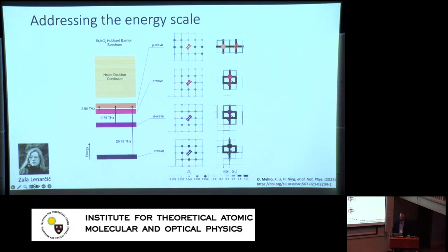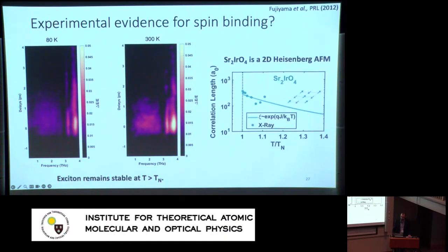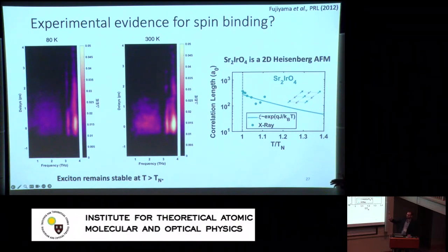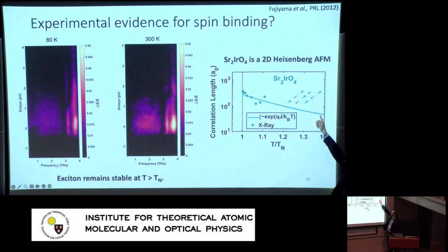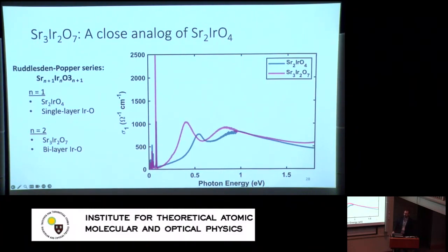We also performed experiments on a related compound, Sr₃Ir₂O₇ (the bilayer 327 analog of Sr₂IrO₄ in the Ruddlesden-Popper iridate series). In 327, because of the bilayer nature, there are more exchange constants to track, and importantly the interlayer exchange JC plays a key role. Different groups have found the magnetism in 327 is likely in the 3D Ising universality class rather than the 2D Heisenberg class, which means that above T_N the correlations shut off at a much more rapid rate — unlike in 214 where spin-spin correlations persist to much higher temperatures (~600 K).